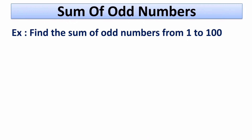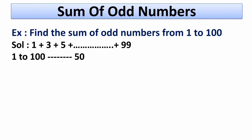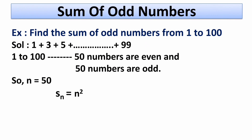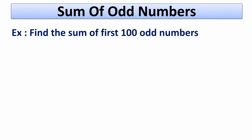Let's start with the first problem: find the sum of odd numbers from 1 to 100. The numbers are 1 plus 3 plus 5 up to 99, as 99 is the last odd number from 1 to 100. Here we have 50 odd numbers, so the value of n is 50. Putting this in the formula Sn equals n squared, we get 50 squared equals 2500. Hence the sum of odd numbers from 1 to 100 is 2500.